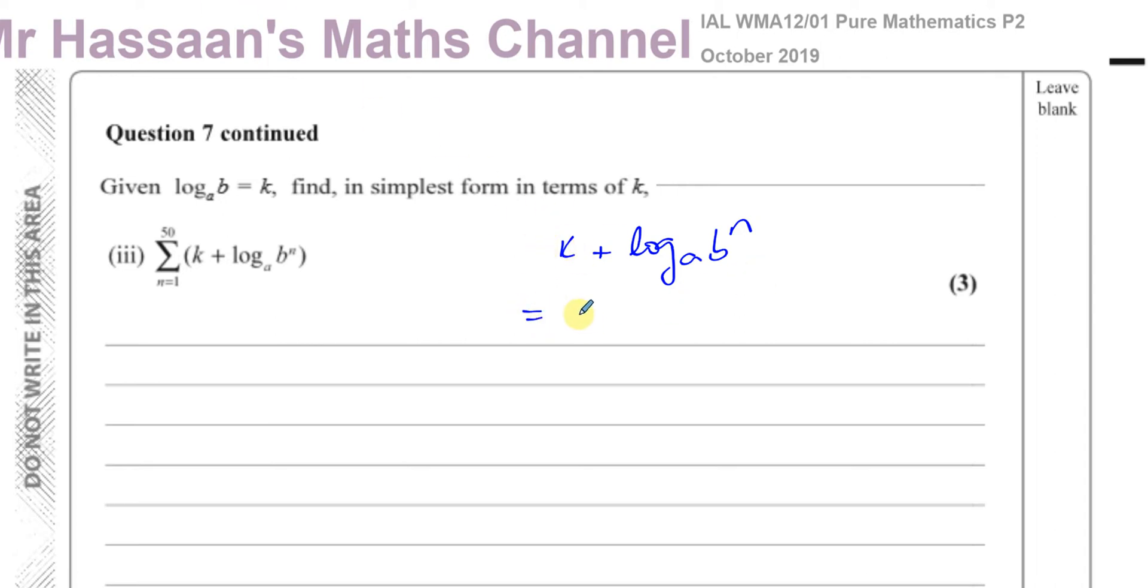Now this is the same as K plus N times log to the base A of B, and that's going to be K plus NK. You can think of that as K times 1 plus N if you want. Either of those will do. So now, what we're going to do is use sigma notation, and in place of all of this, I'm going to write K times 1 plus N. So I've got to find the sum of all of that when I put N equals 1 up to when I put N equals 50.